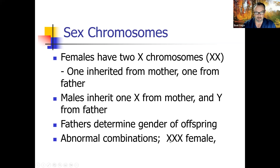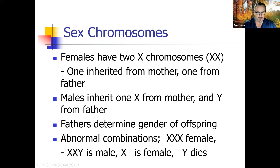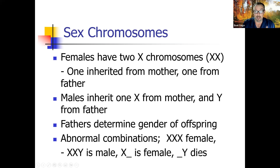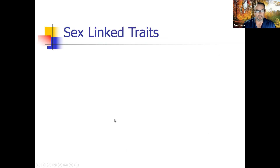Abnormal chromosome combinations: XXX becomes female, sometimes called super female. Two X's and a Y is male because any presence of a Y converts the baby into a boy. X-blank is a named disorder, and blank-Y dies. You have to have at least one X chromosome to survive because there are many genes on the X chromosome that have nothing to do with gender — things like how your blood is built and how your eyes are built.